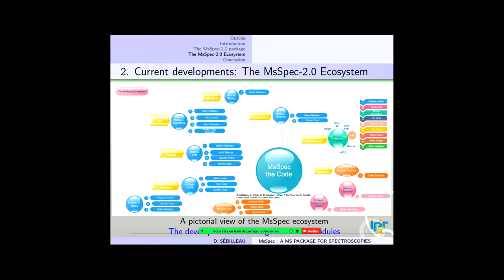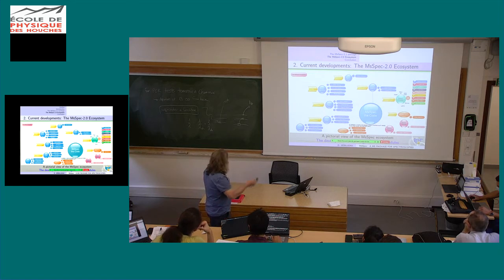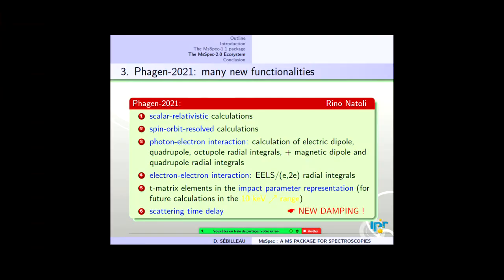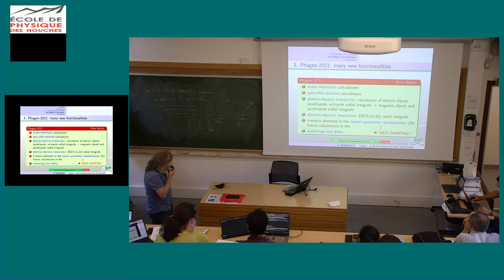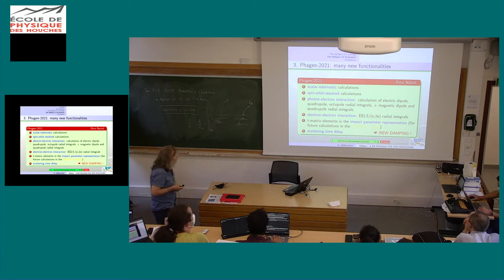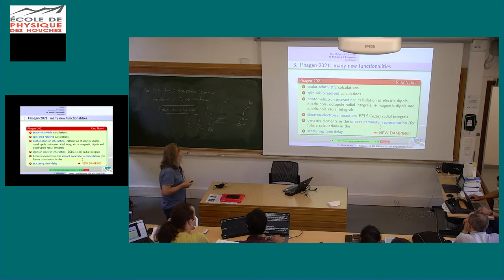Now it comes to the current developments. The ecosystem gravitating around the code — the T-matrix calculation is done by a code called phase_gen, which is a fork of a code developed by Rino Natoli originally for X-ray absorption. Up to now there were no relativistic effects included. Now you can do scalar relativistic calculations of the T-matrices and the radial matrix elements. You can do spin-orbit resolved calculations.